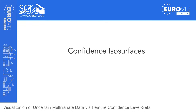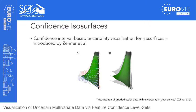Now let's look at an uncertainty visualization technique: confidence isosurfaces. This is a confidence interval based uncertainty visualization method for isosurfaces, introduced by Zena et al. In their study they also look at multiple other ways to convey uncertainty information, for example using glyphs. We are interested in the visualization showing semi-opaque isosurfaces computed on the basis of some confidence interval. This provides an intuitive understanding by presenting different shapes of isosurfaces due to uncertainty in the data.